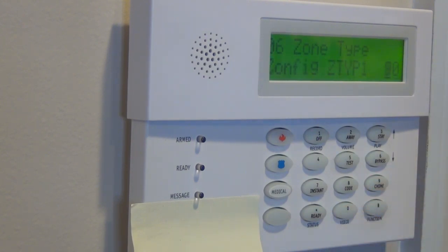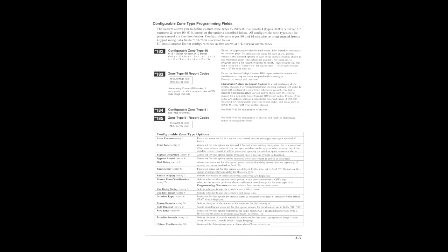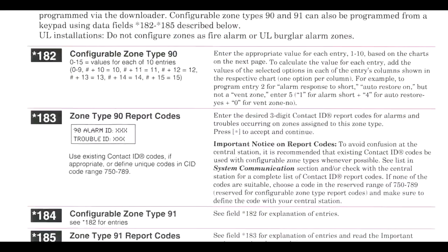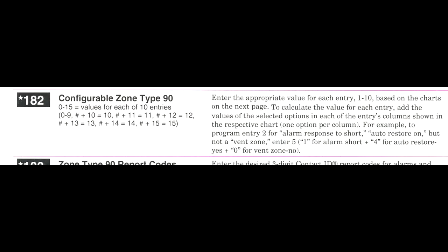Let's take a closer look at that now. We are going to thumb to page 4-11 in our programming manual. On this page at the top we will see Star 182. Taking a closer look at this field, we can see it is entitled Configurable Zone Type 90.